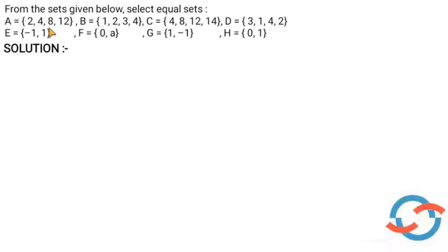So, A is equal to A. Now B is equal to set of 1, 2, 3, 4.